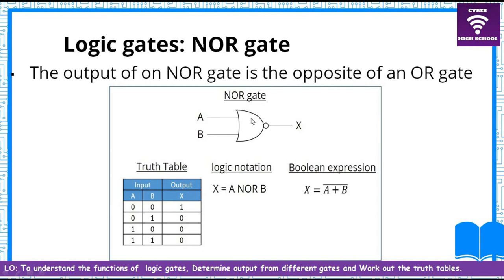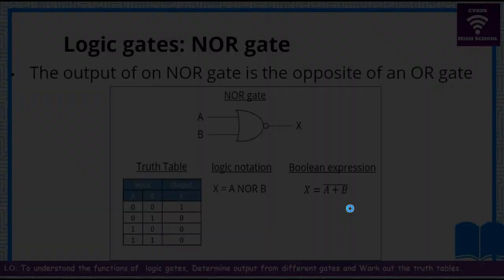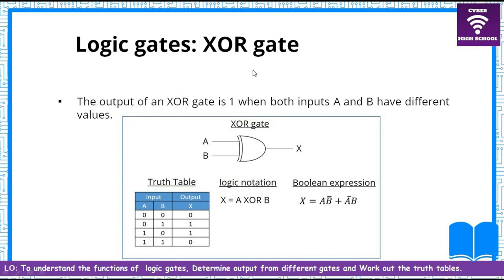The NOR gate is the NOT OR gate. It has the shape of the OR gate but with a circle next to it to indicate it is a NOR gate — the opposite of the OR gate. Where the OR gate output was zero you now get a one, and where it was ones you now get zeros. The Boolean expression is x = A+B with a bar on top (Ā+B̄ overline).